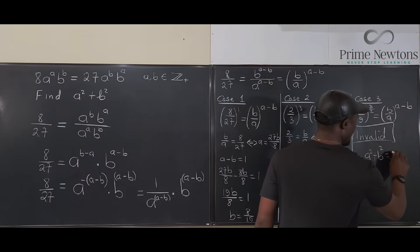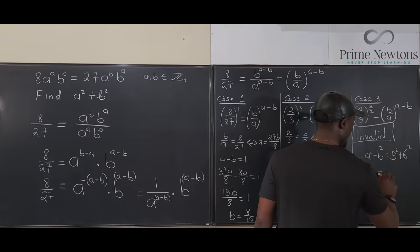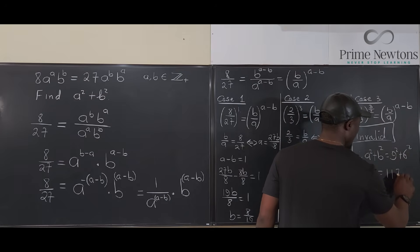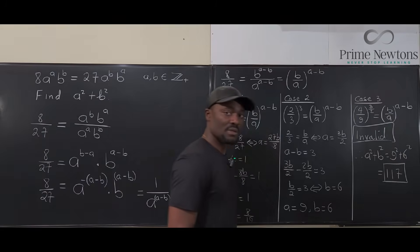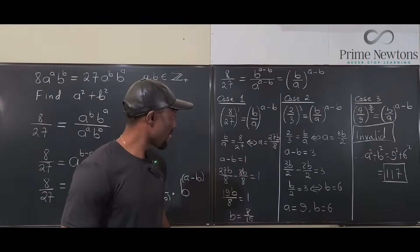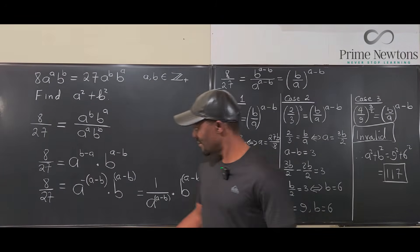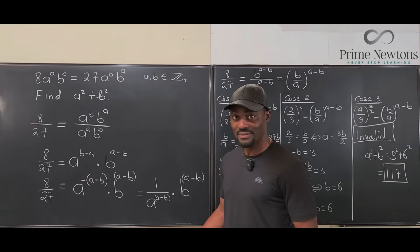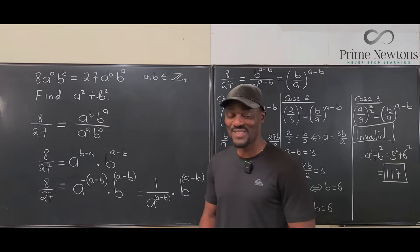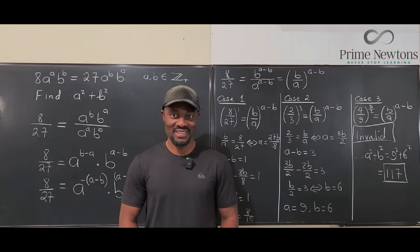Therefore, a squared plus b squared equals 9 squared plus 6 squared, which equals 117. That's our solution. Never stop learning — those who stop learning stop living. Bye!